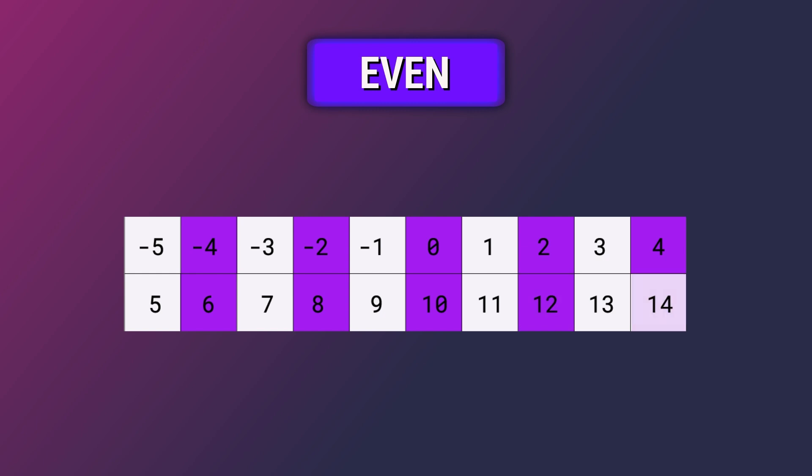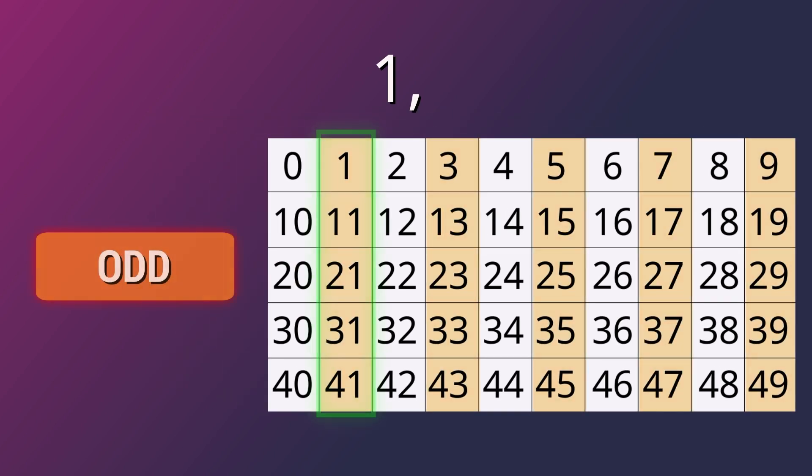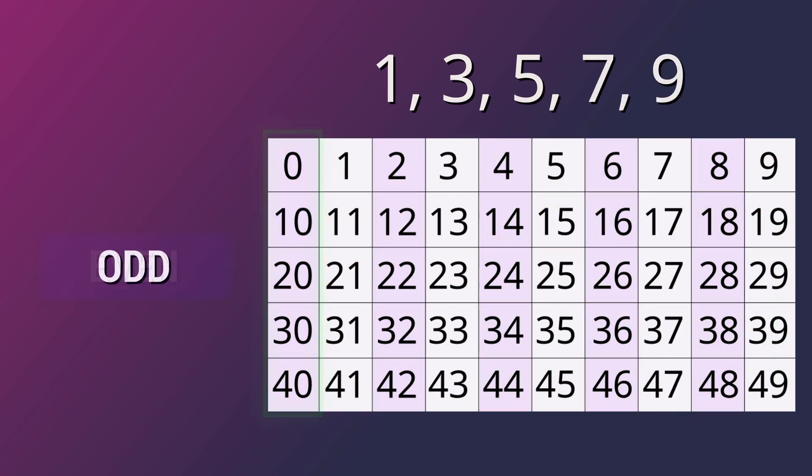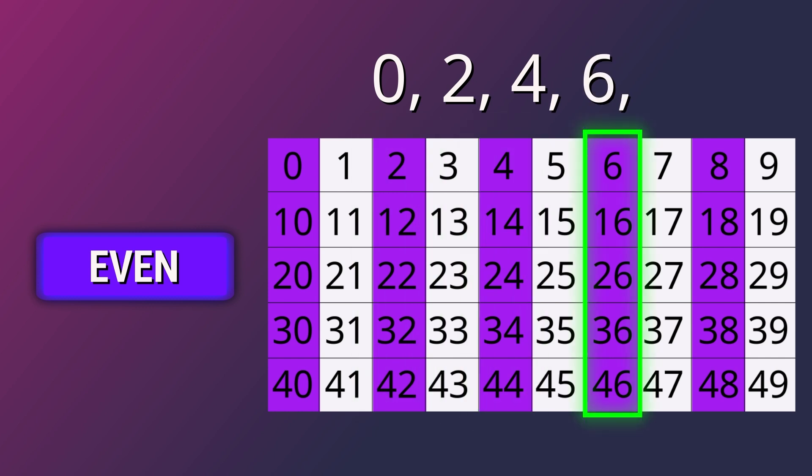Remember, the list goes on and on. If you want to quickly find out if a number is odd or even, you can tell by its single digit number. All numbers that end with one, three, five, seven and nine are odd. Therefore, all numbers that end with zero, two, four, six and eight are even.